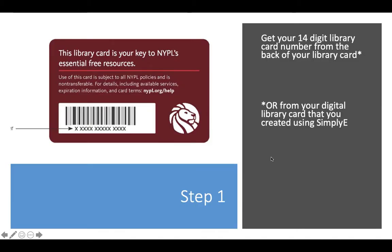The first thing you need to do is get that library card number. If you have a New York Public Library card, it's the 14-digit number on the back. But if you don't have one, you can watch my other video where you can create one using the Simply E app.